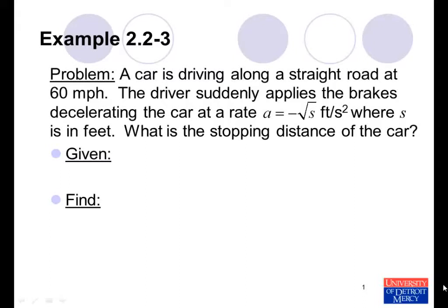This problem is example 2.2-3 from the textbook Conceptual Dynamics. The problem statement reads: A car is driving along a straight road at 60 miles per hour.